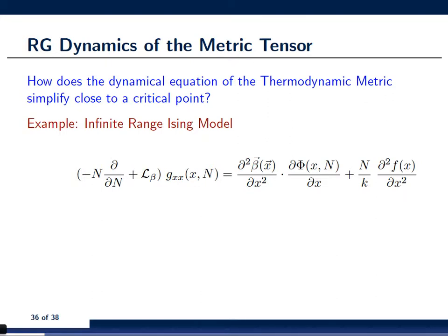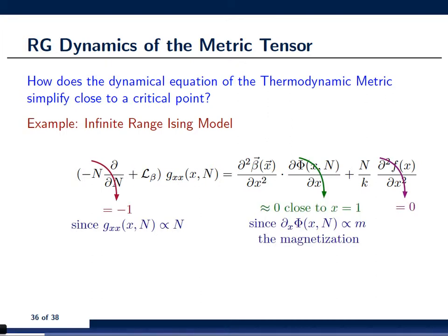For this model, our dynamical equation is essentially one-dimensional, because x is the only control parameter. So, I've written this equation down for you here, and I would like to explain now how this equation simplifies in the vicinity of the critical point x equals to 1.